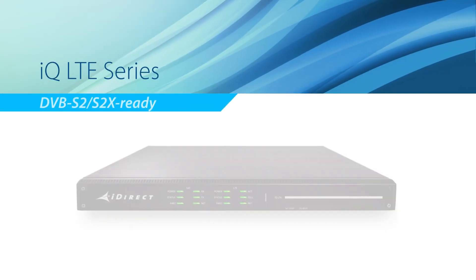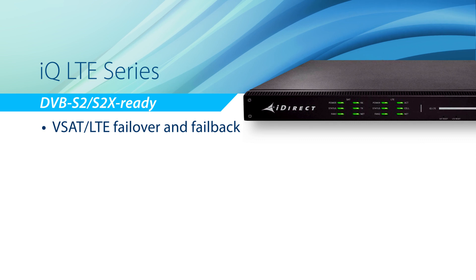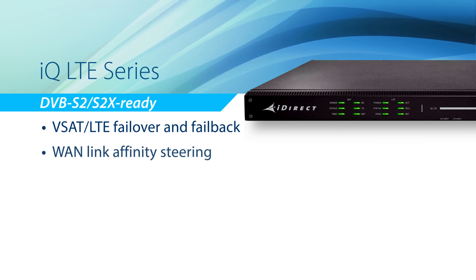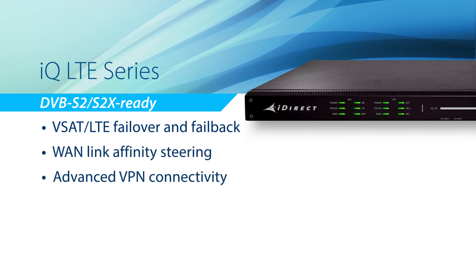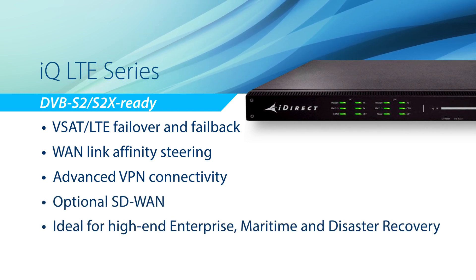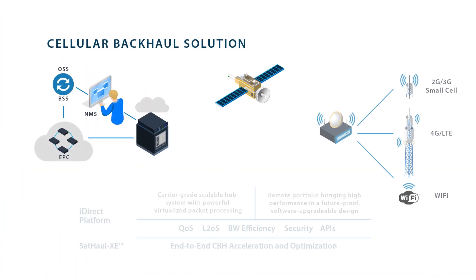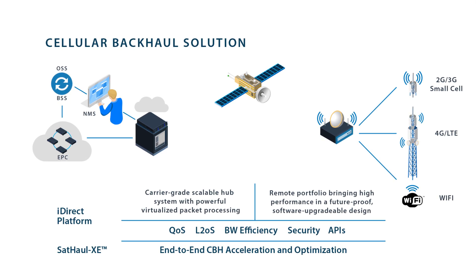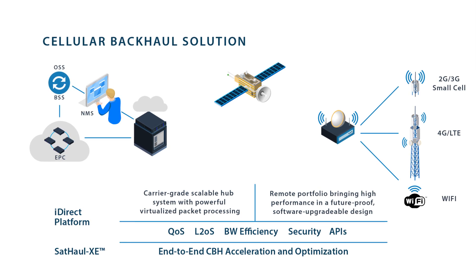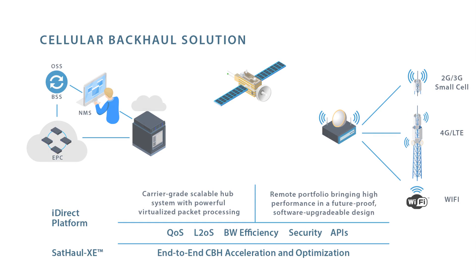The newest addition to the iQ Series is the iQ LTE. This new hybrid remote offers the benefits of advanced satellite connectivity together with LTE connectivity in a single box, creating opportunities for a new variety of use cases. With WAN link affinity, the iQ LTE can switch automatically between satellite and cellular connectivity for SD-WAN type deployments for enterprise, maritime, and disaster recovery applications. iDirect's SatHaul XE optimization suite is available with any iDirect remote and integrates cellular backhaul optimization features for end-to-end compression, acceleration, and security — particularly important for 4G LTE deployments.